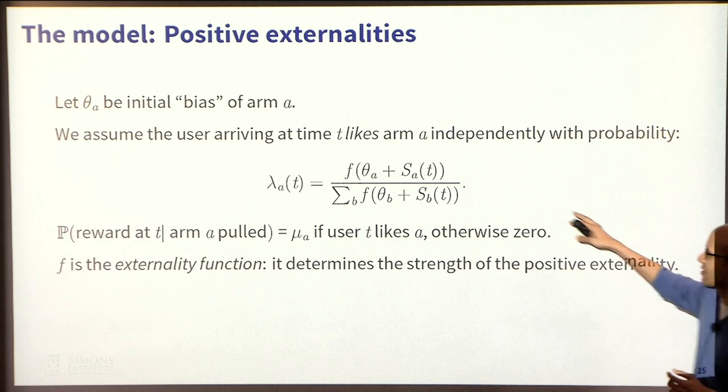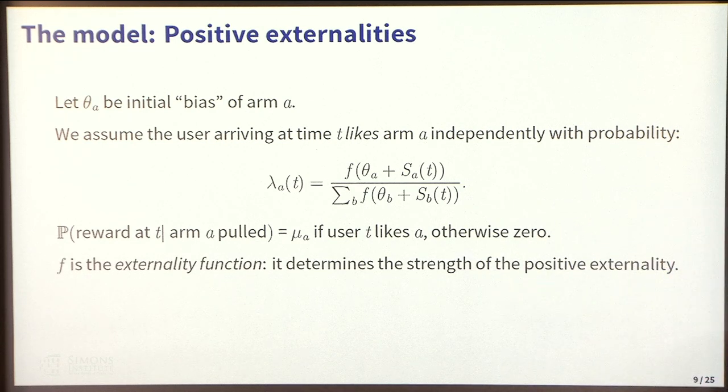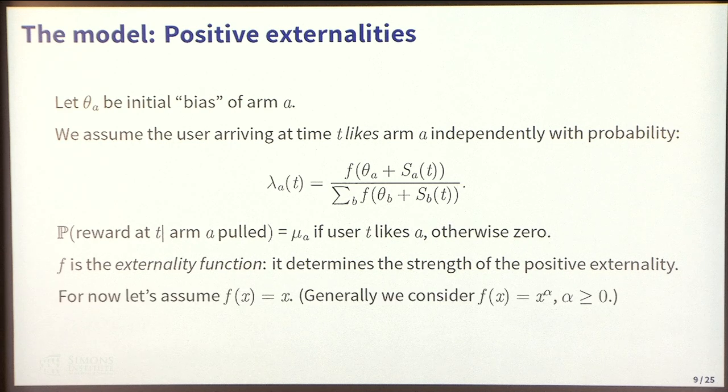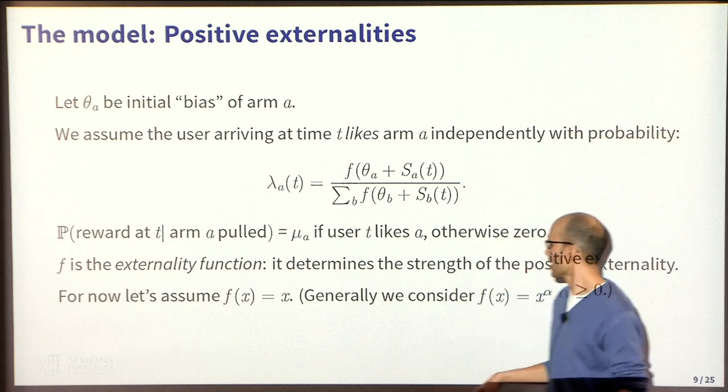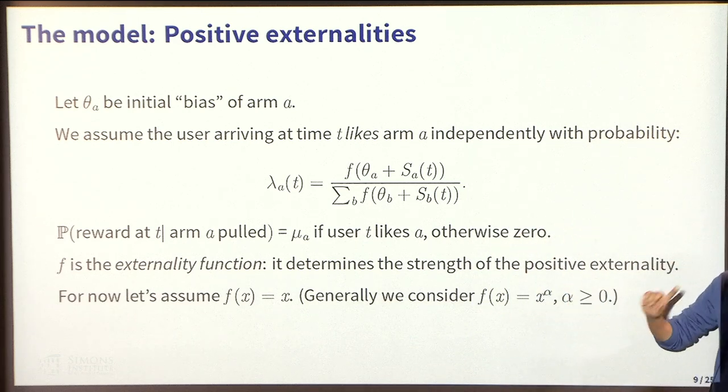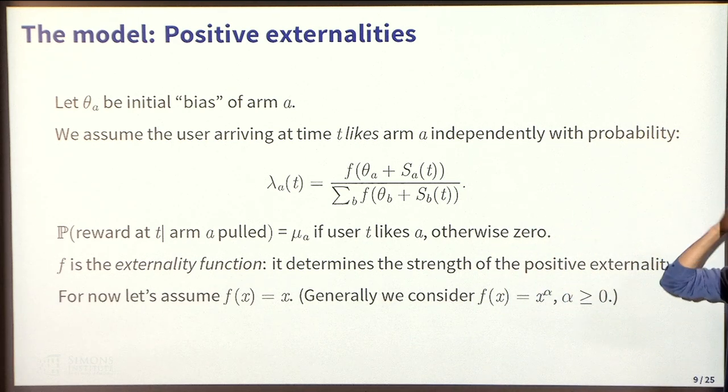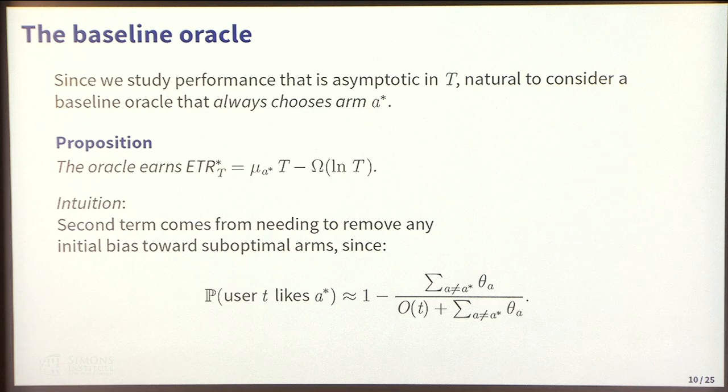F is what I'm going to call the externality function. It determines the strength of this positive externality. For basically everything I do up until the last couple of slides of the talk, I'm going to assume that F is just X, just linear. In general, we consider Fs that are X to the alpha, with the exception of one result where I'll mention to you that holds for more general F.